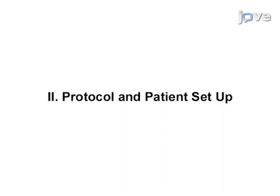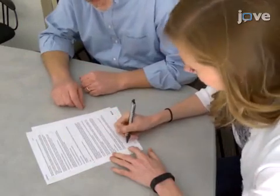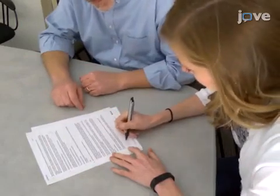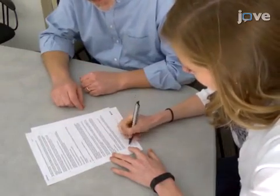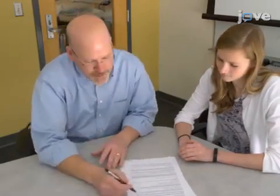Prepare for this experiment by first setting up an MRI protocol. Suggested parameters can be found in the tables accompanying this video. Then, obtain written and informed consent from the participant. Also confirm that the subject has abstained from moderate or heavy exercise 48 hours prior to testing and from any substances that may interfere with measurements.